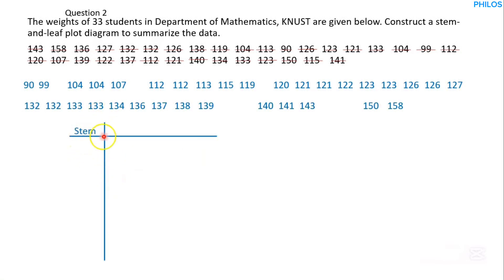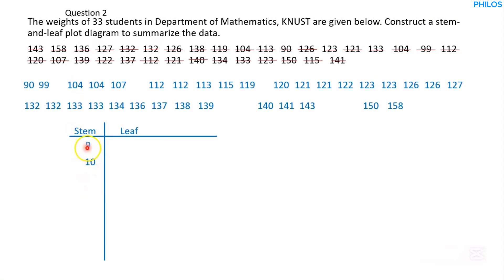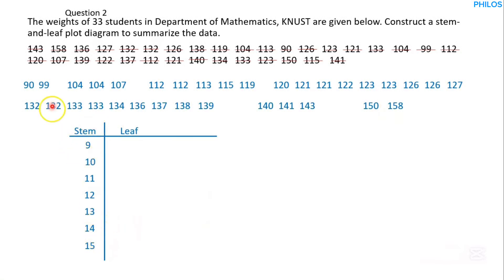Label the columns 'stem' and 'leaf.' For the stems: since values range from 90 to 158, the 90s use stem 9 (single digit). The 100s and above are three-digit numbers, so we use the first two digits as stems: 10, 11, 12, 13, 14, and 15.